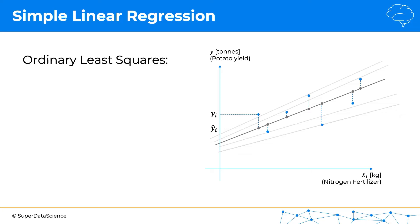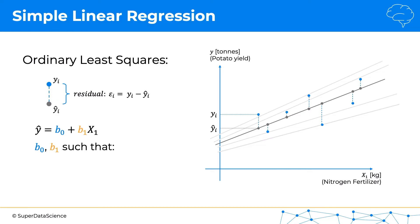That difference between actual yield and predicted yield is normal — the line is never going to go perfectly through every single data point. But what we want to do is find the best line, which will be related to how small these differences are. The difference between yi and yi-hat is called the residual.